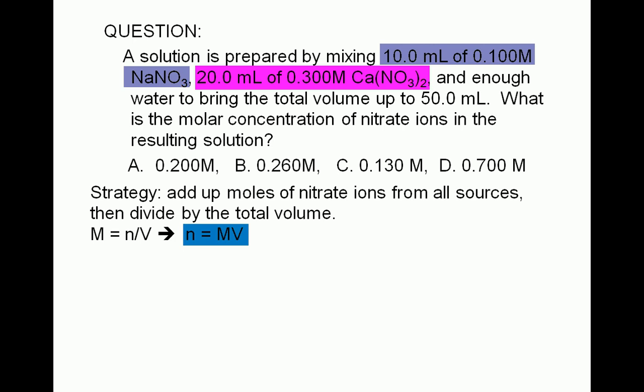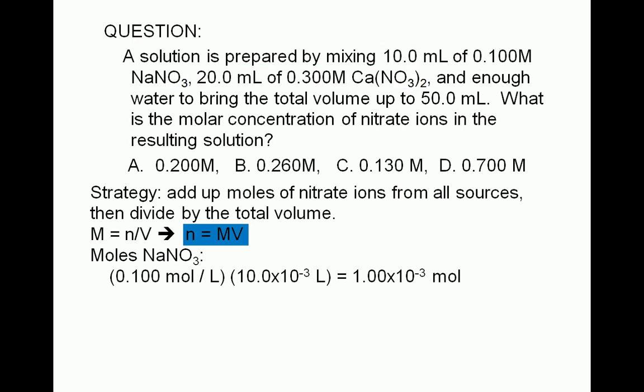Let's calculate the moles of solute first. The number of moles of sodium nitrate is equal to its molarity, 0.100 moles per liter, times its volume, 10.0 milliliters. A milliliter is equal to 10 to the negative 3 liters. This gives us 1.00 times 10 to the negative 3 moles of sodium nitrate.